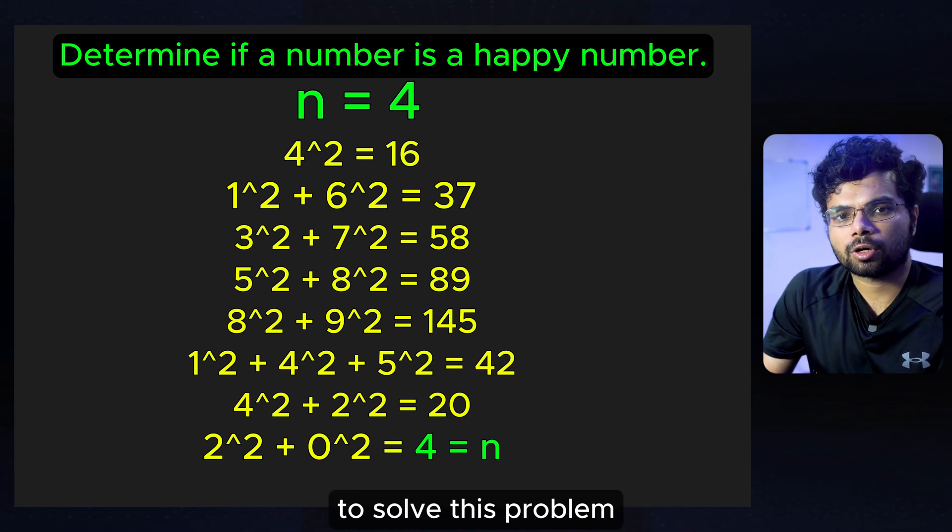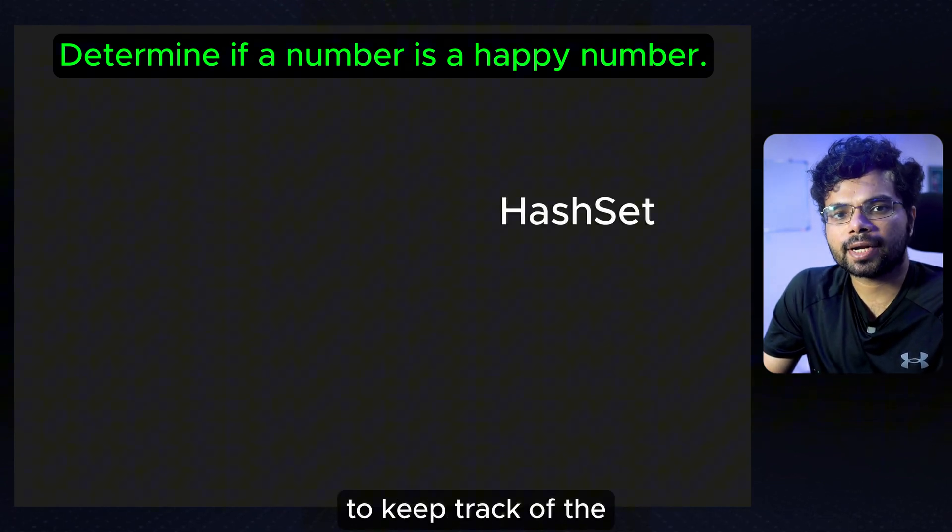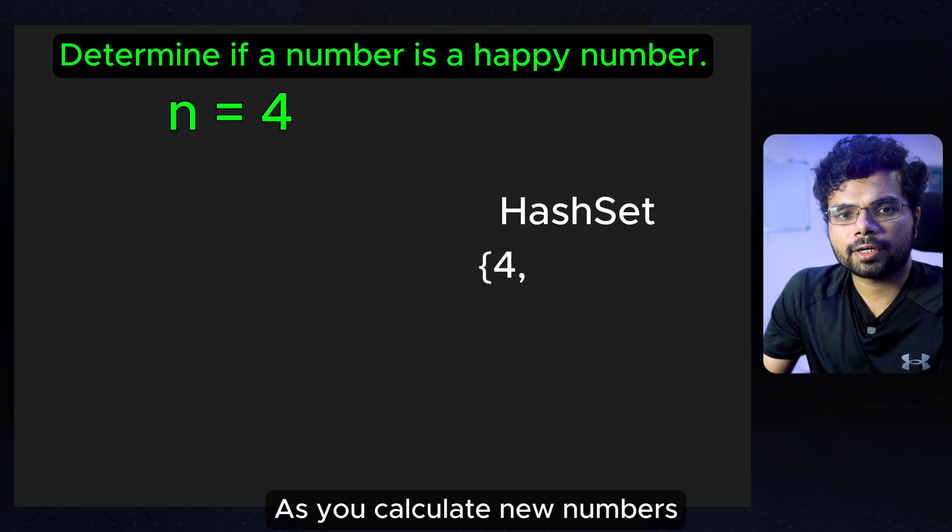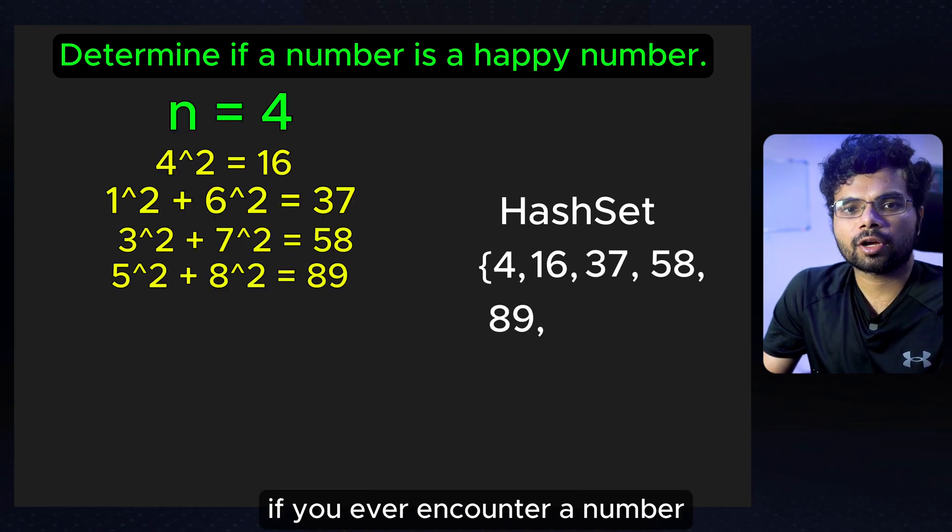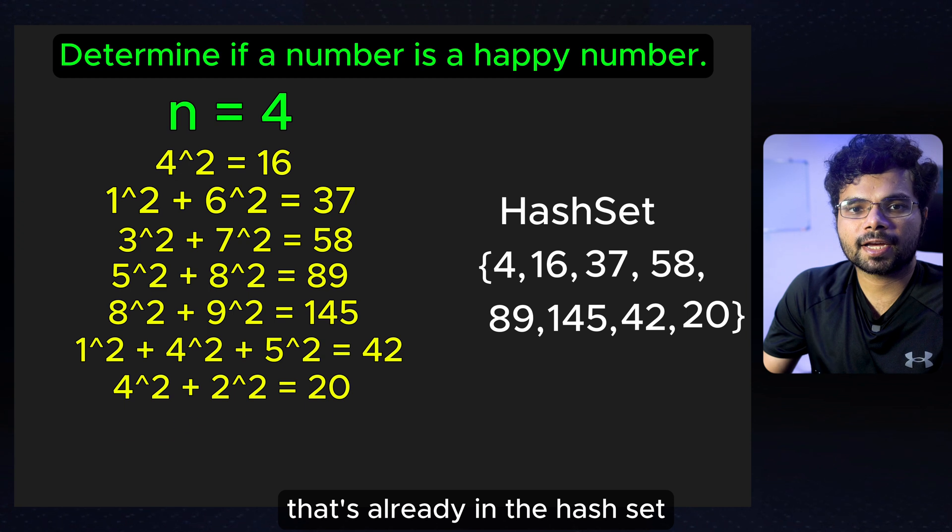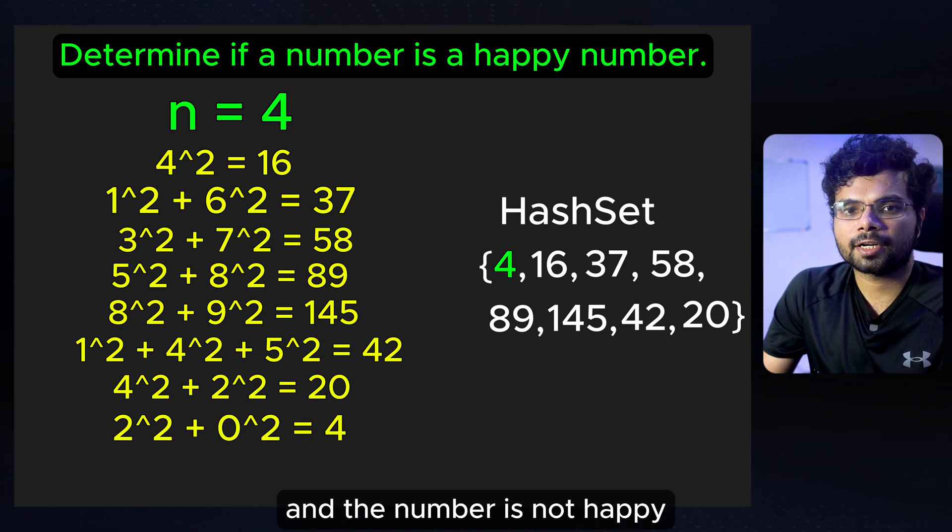One straightforward approach to solve this problem is by using a hash set to keep track of the numbers we have seen. Here is the idea. As you calculate new numbers, add them to the hash set. If you ever encounter a number that's already in the hash set, that means we are in a loop, and the number is not happy.